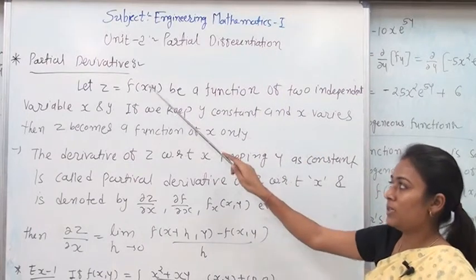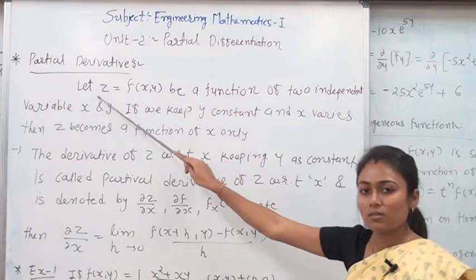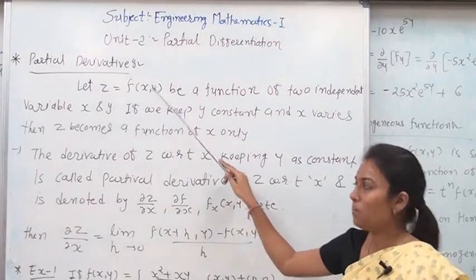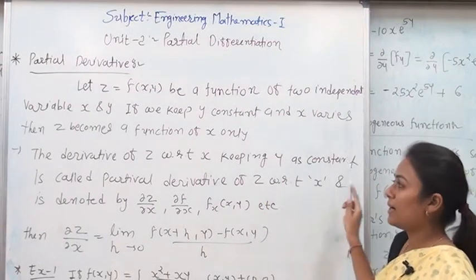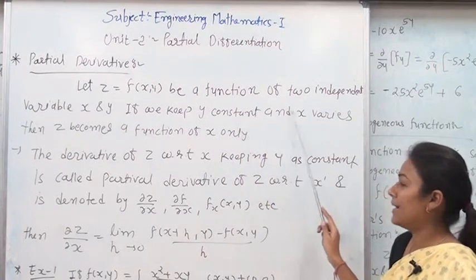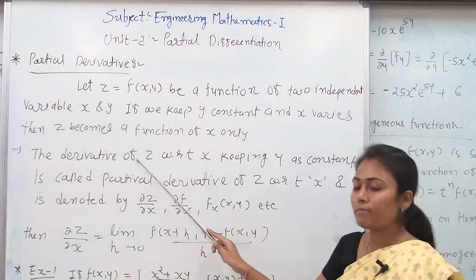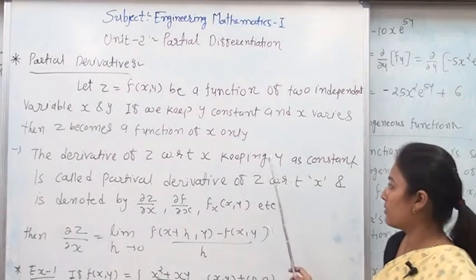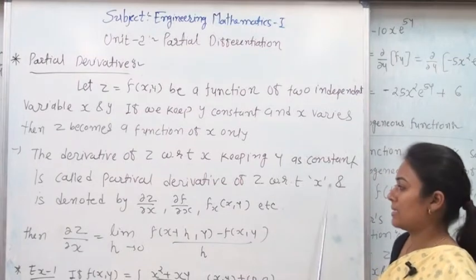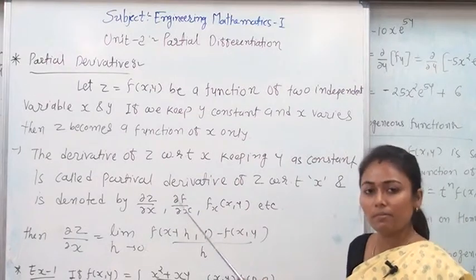In partial differentiation we are learning about partial derivatives. First, the definition of a partial derivative: let z = f(x, y) be a function of two independent variables x and y. If we keep y as a constant and x varies, then z becomes a function of x only. The derivative of z with respect to x, keeping y constant, is called the partial derivative of z with respect to x, denoted by ∂z/∂x or ∂f/∂x.